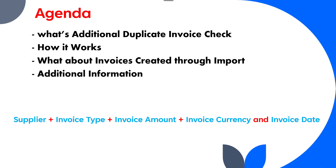Additional information: the Additional Duplicate Invoice Check is only applicable for Standard and Prepayment type invoices. It does not check the invoice number as an attribute to identify potential duplicates. It also does not perform a check on auto-generated invoices such as pay-on-receipt, pay-on-use, intercompany, and debit memo invoices. This feature is only available from Release 12.